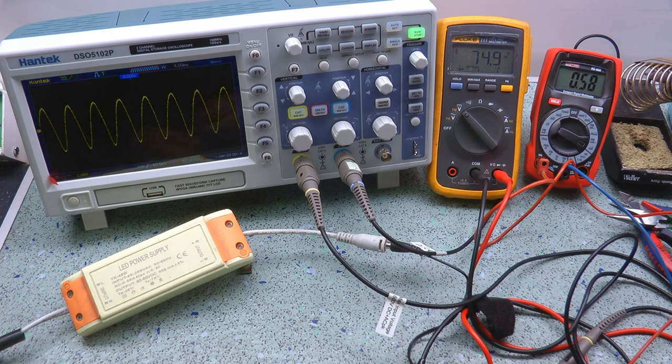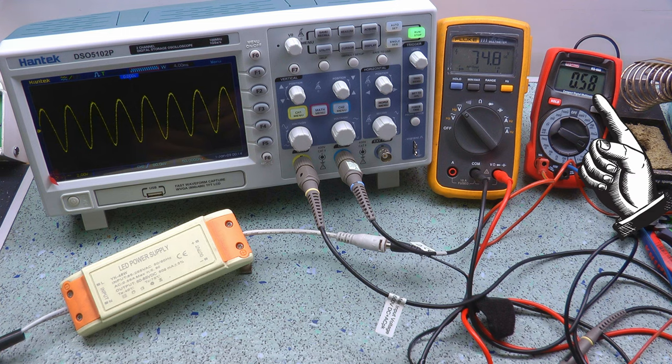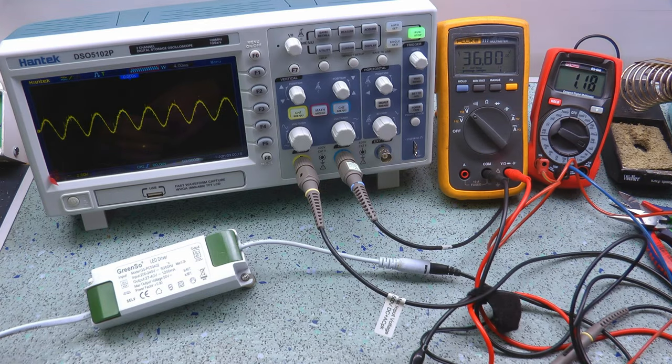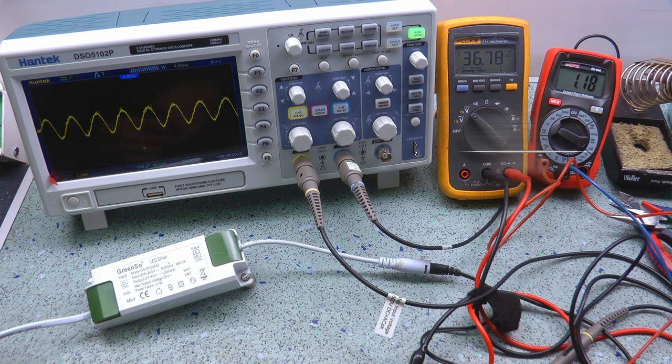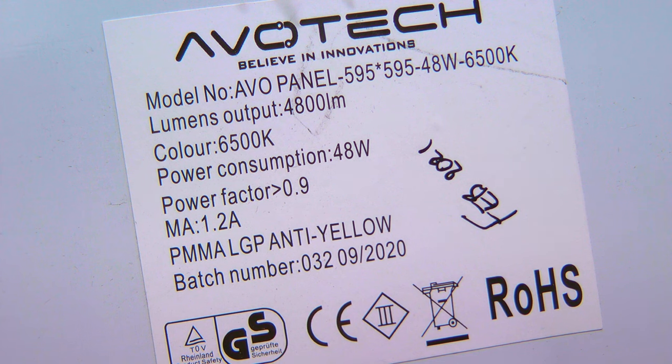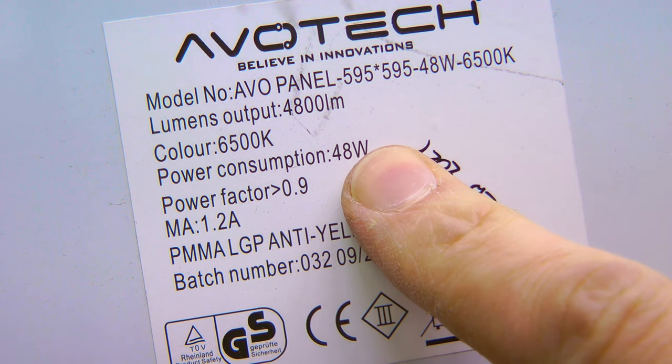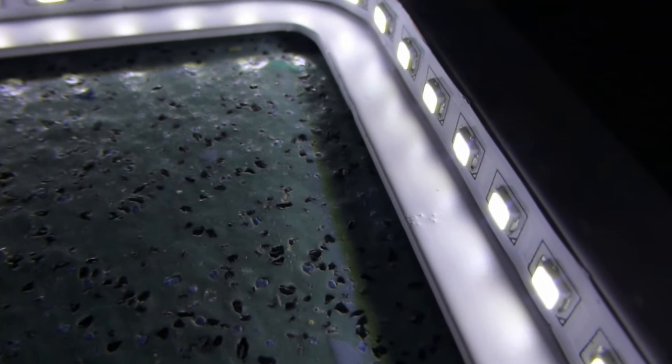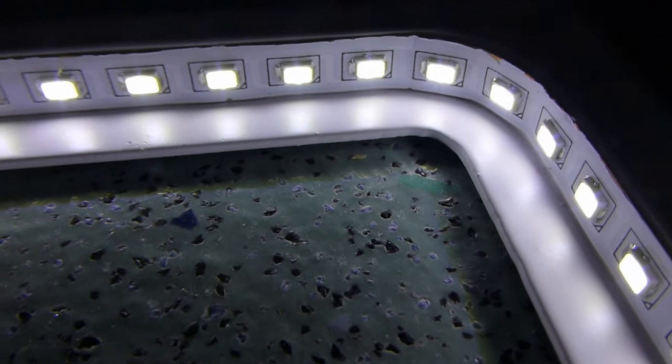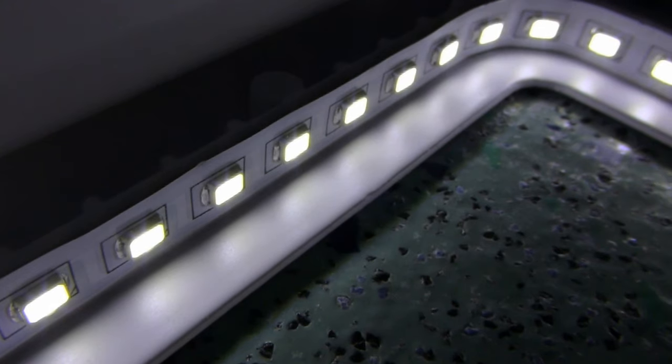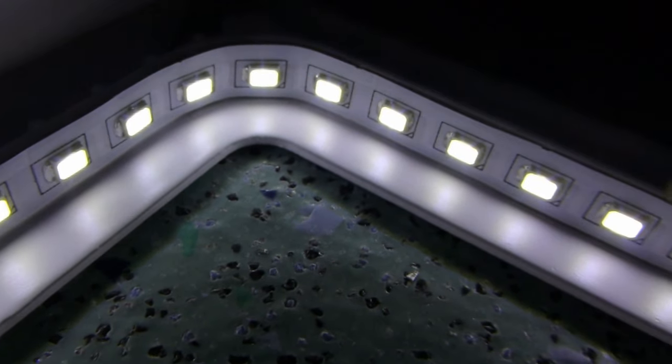The 2017 ones run at a little under 600 milliamps and 75 volts, whereas the 2021 ones run at a little under 1.2 amps and 37 volts. So both are roughly 43 watts, a bit less than the 48 watts advertised. This difference in supply will be down to the series parallel arrangement of the individual LEDs inside the panels, and it means the drivers aren't interchangeable.